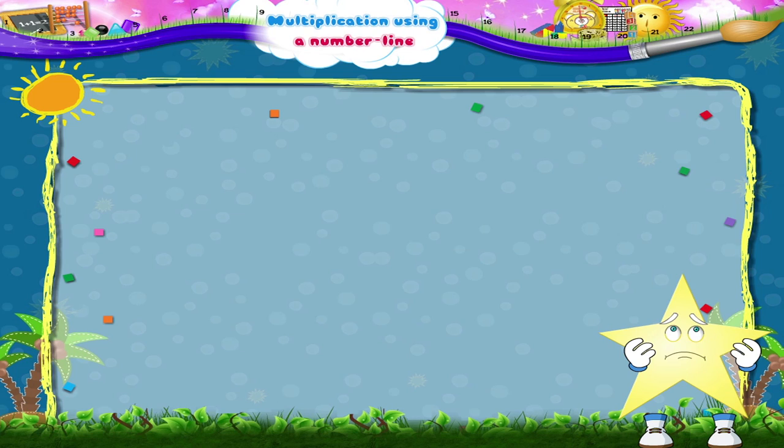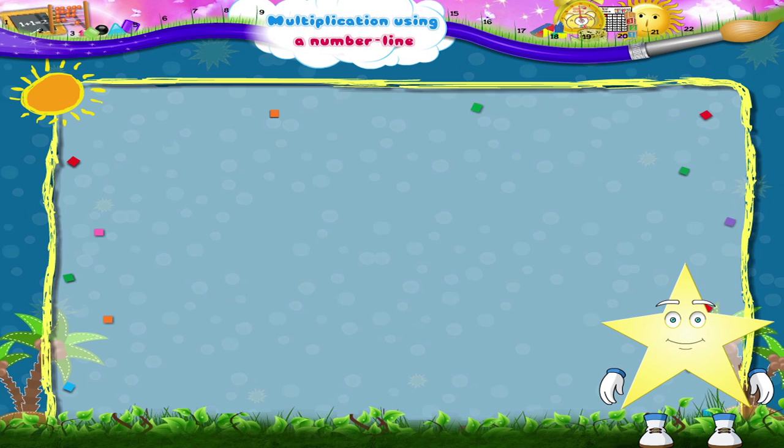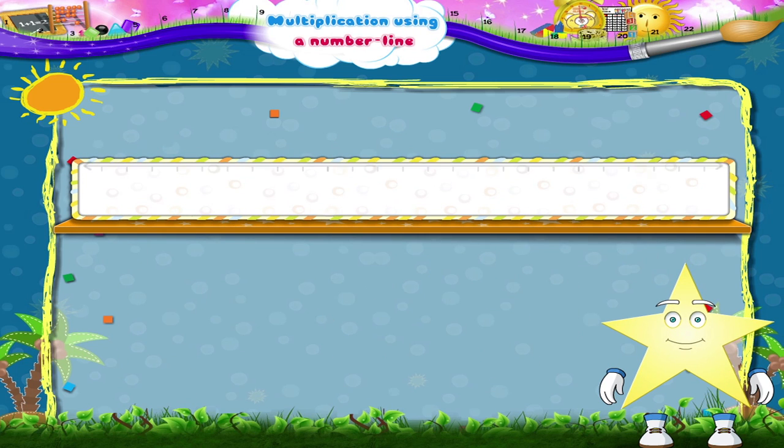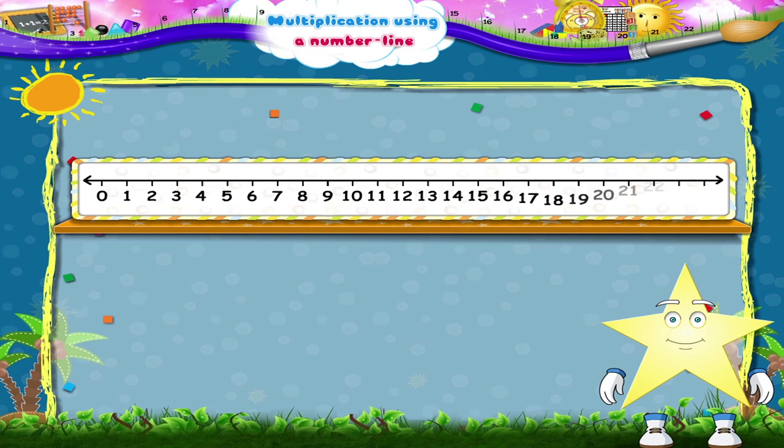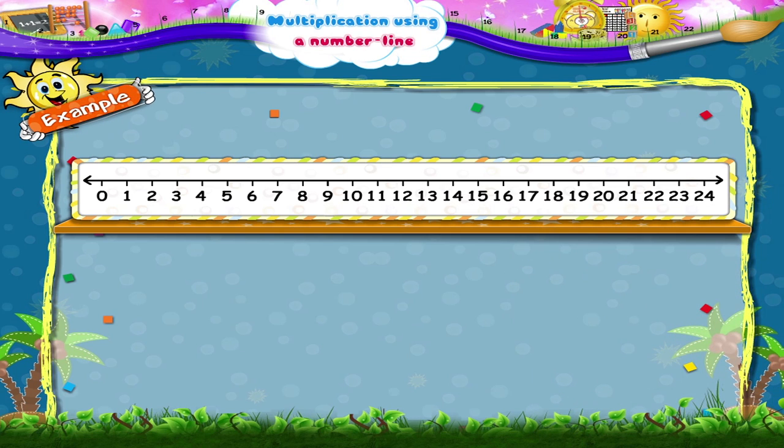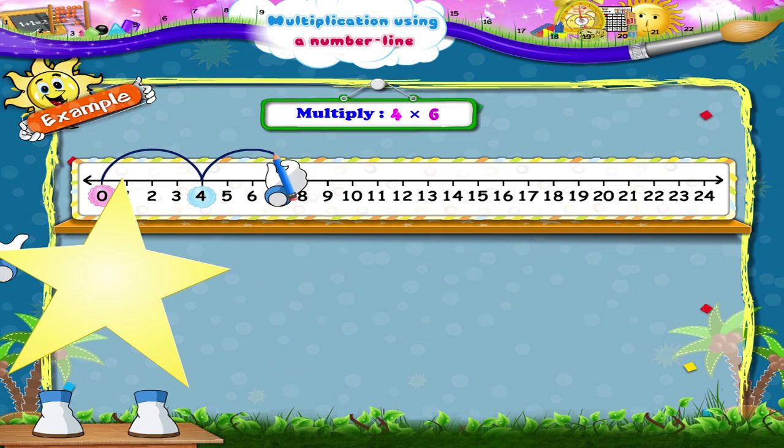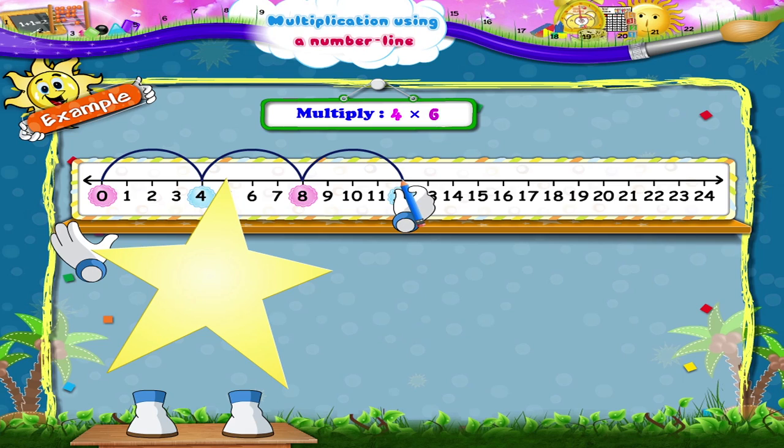What happened Starry? Oh, you are tired jumping. Hmm, I have an idea. Let us use this pencil and solve multiplication examples using a number line. Let us consider the example four into six. Starting from zero we shall move the pencil to the right by counting forward in stages of four.